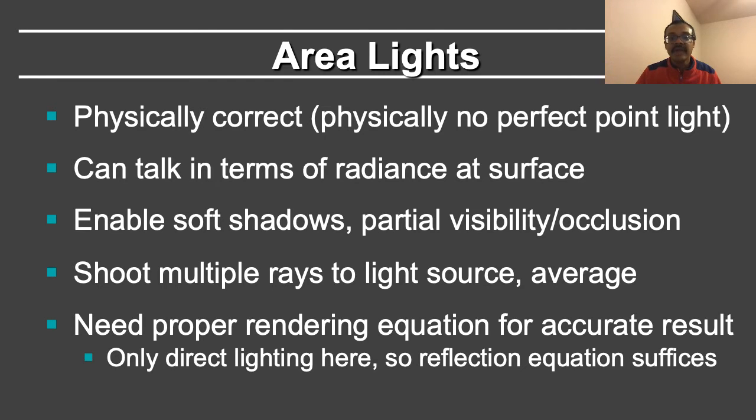Moreover, area lights enable physically based effects such as soft shadows. They enable partial visibility and occlusion. In fact, we will need to shoot multiple rays to the light source and average the results at each pixel to enable soft shadows.